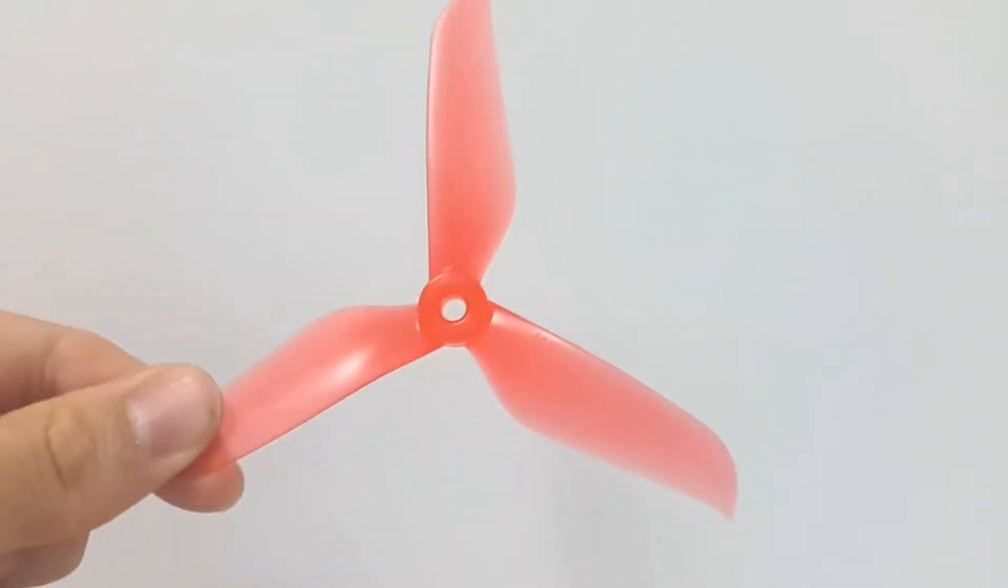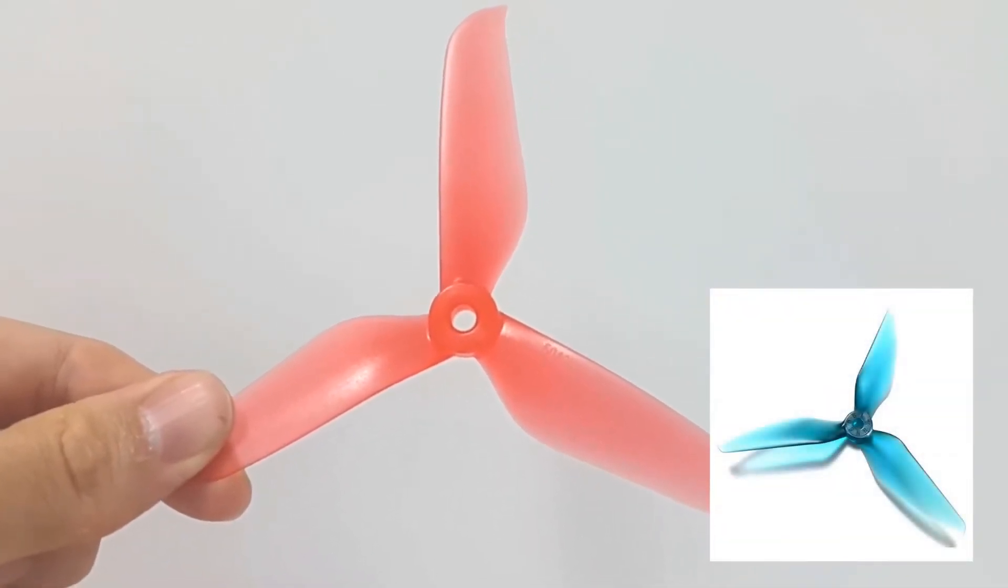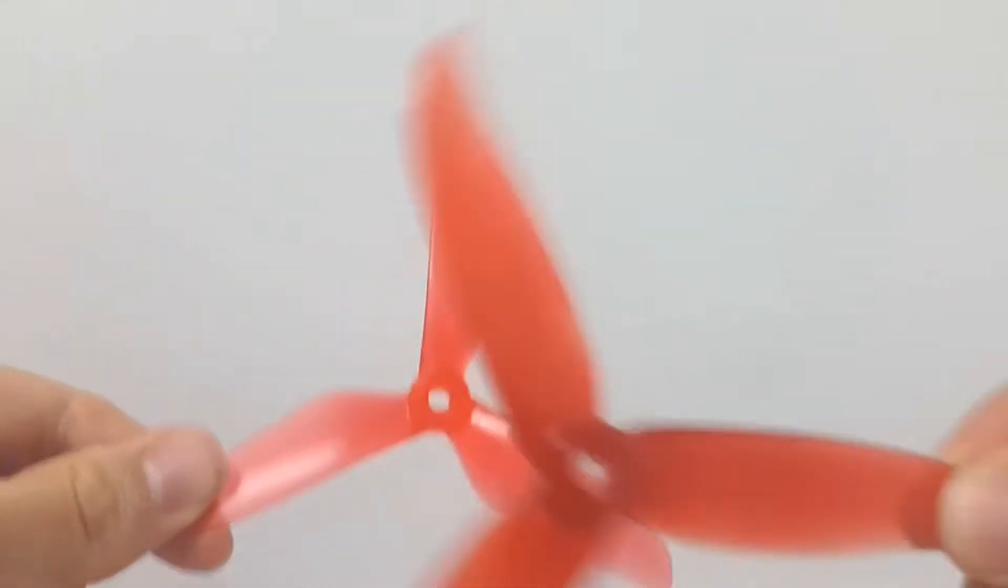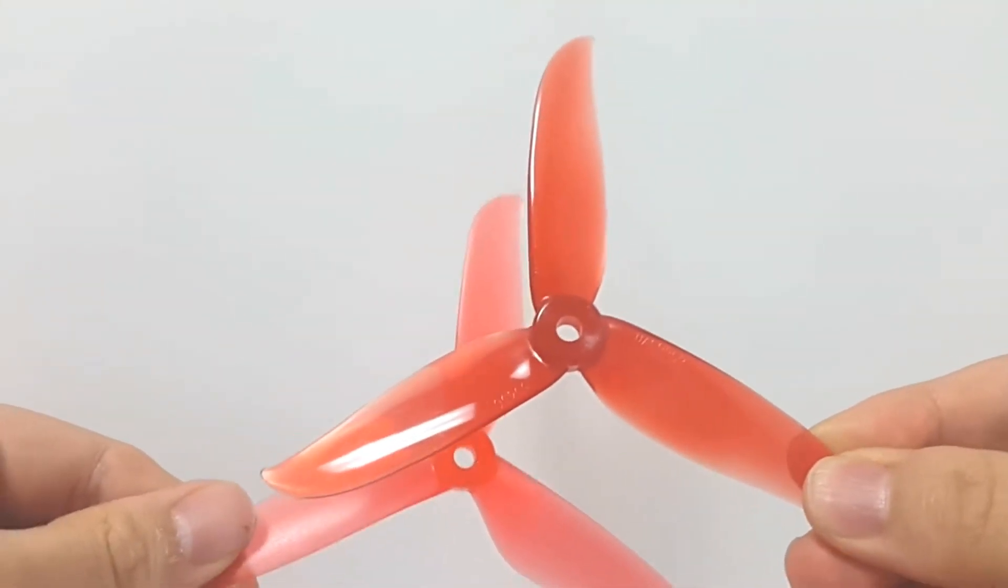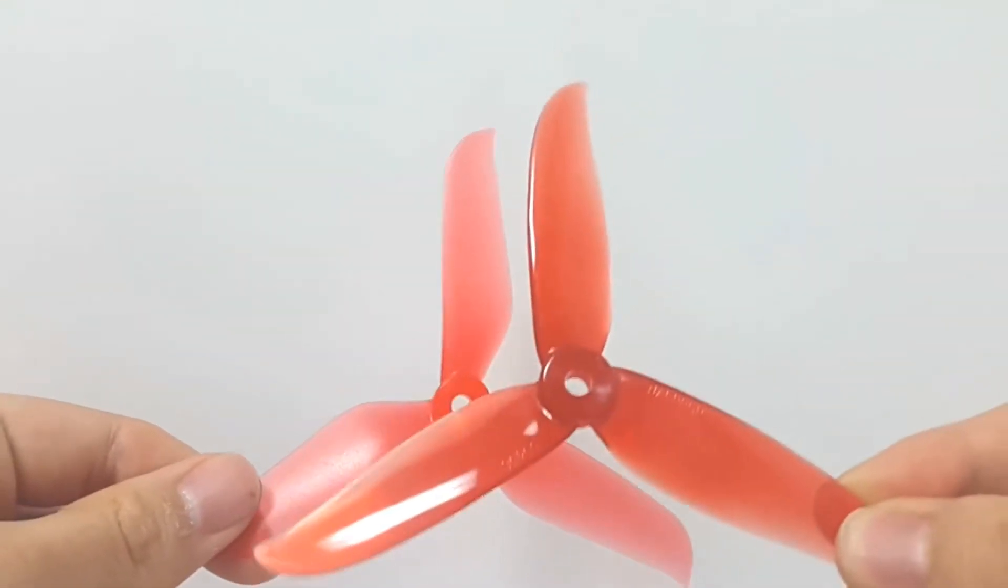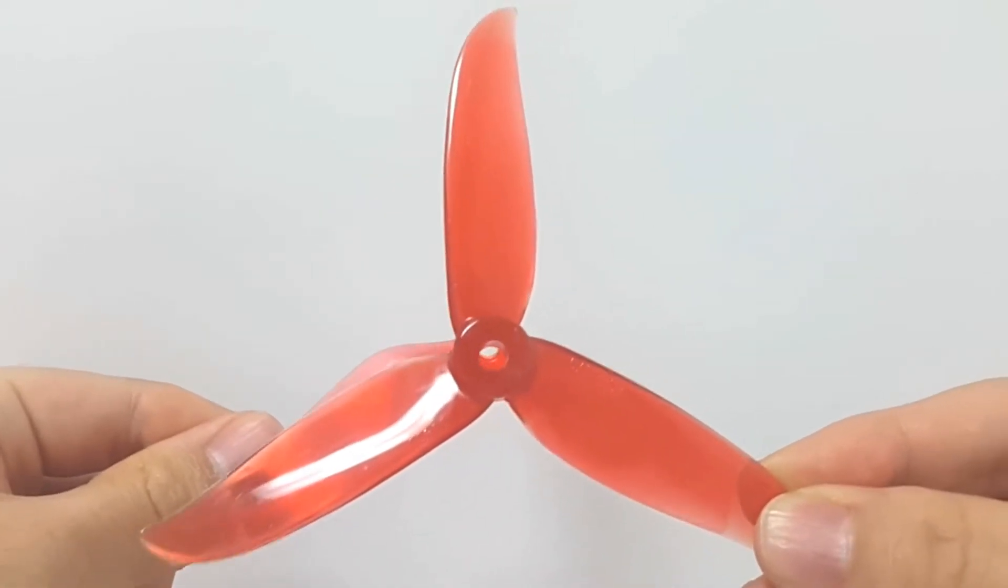When I got this prop, I thought that it would look like the Racecraft 5051 props. But it turned out it looks more like the DAL prop. This is the Cyclone 5045. And they look identical if you overlay it.